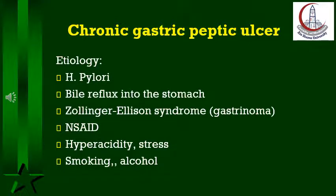Mucosal biopsy near the pylorus is taken for Helicobacter pylori CLO test in case of pre-pyloric ulcers. Extensive gastroduodenal multiple ulcerations resistant to healing should raise the suspicion of Zollinger-Ellison syndrome, and serum gastrin should be measured.